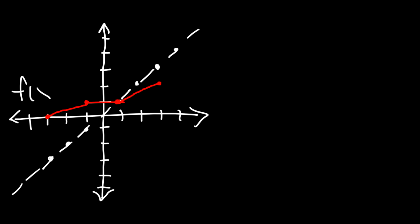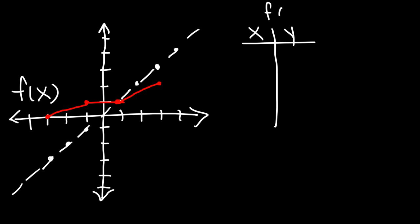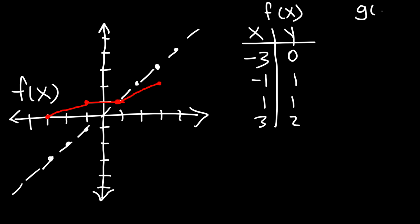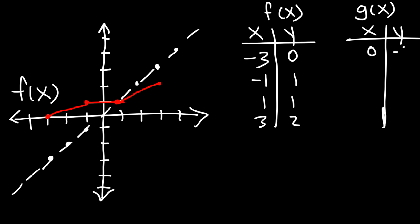Using those points, go ahead and graph the inverse function g of x. First I'm going to make an xy table for f of x. The first point was negative three, zero; the next one was negative one, one; then one, one; and then three, two. For the inverse function g of x, all you need to do is switch x and y.